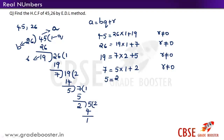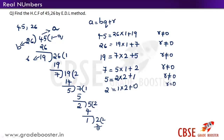Once again divide: take 1 as divisor and 2 as dividend. 1 × 2 = 2 and the remainder is 0. Expressed in the form of Euclid's division lemma: 2 = 1 × 2 + 0. Since r = 0, b is the HCF. Here b is 1, so the HCF of 45 and 26 is 1.